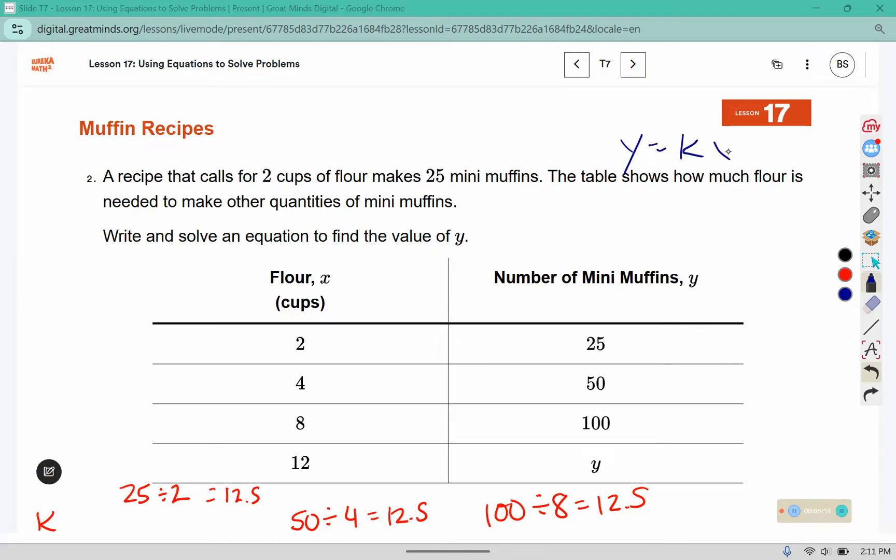So we use that template, y equals kx. Now we know k is 12.5, so we're replacing k with the number 12.5. So we wrote the equation, now we need to solve it for y. We are looking for y when x is 12. So we're replacing that number x with the number 12. Again, this means to multiply 12.5 times 12, which is 150.